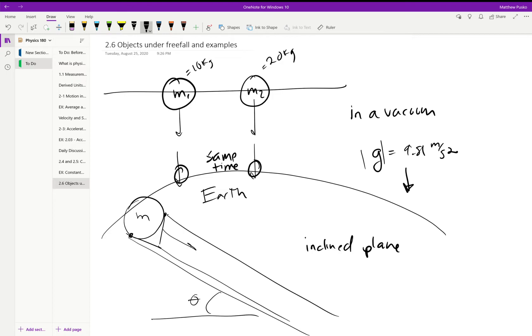But this allowed him to make very accurate measurements in distinct time intervals, and by increasing the slope he was able to draw conclusions about free falling objects.